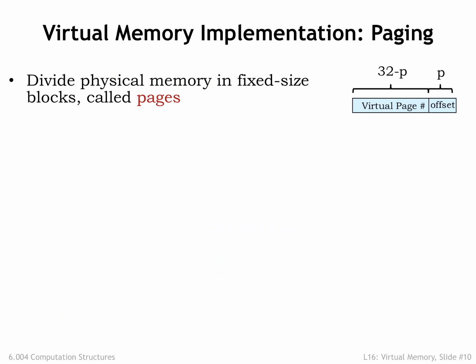Of course, we'd need an impossibly large table to separately map each virtual address to a physical address. So instead we'd divide both the virtual and physical address spaces into fixed-size blocks called pages. Page sizes are always a power of 2 bytes — say 2 to the p bytes — so p is the number of address bits needed to select a particular location on the page. We'll use the low-order p bits of the virtual or physical address as the page offset. The remaining address bits tell us which page is being accessed and are called the page number. A typical page size is 4 to 16 kilobytes, which corresponds to p equal to 12 and p equal to 14 respectively.